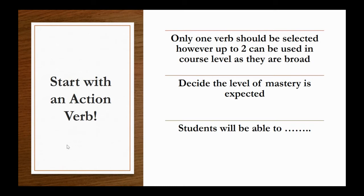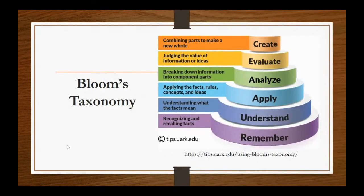'Students will be able to' is an assumed phrase — that's why we always start with our verb when we write course level outcomes. Here is Bloom's taxonomy — you can see it in the pyramid form. It really is the key foundation for our outcomes, because these are the verbs, and a way of evaluating the level of mastery as we create the outcomes.